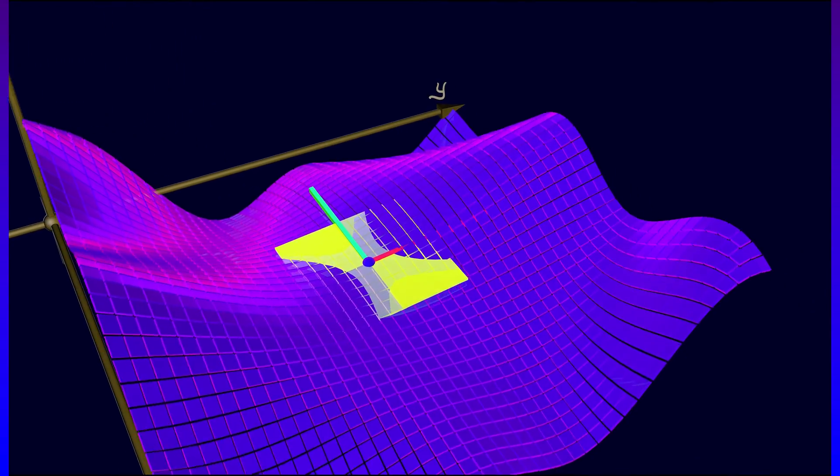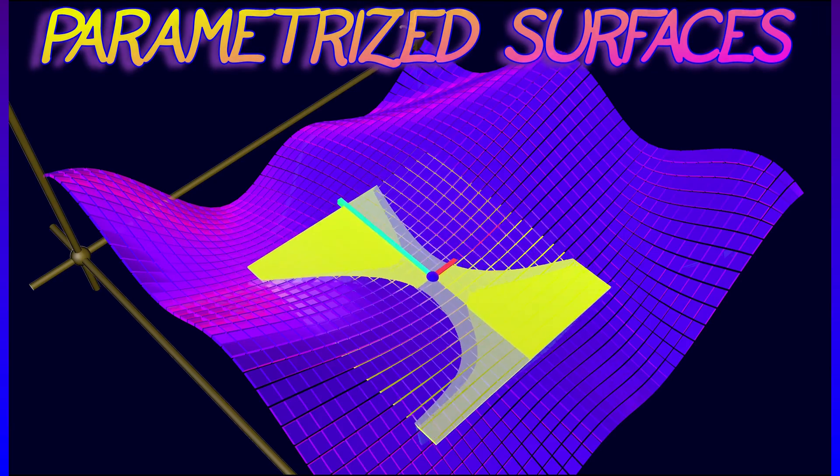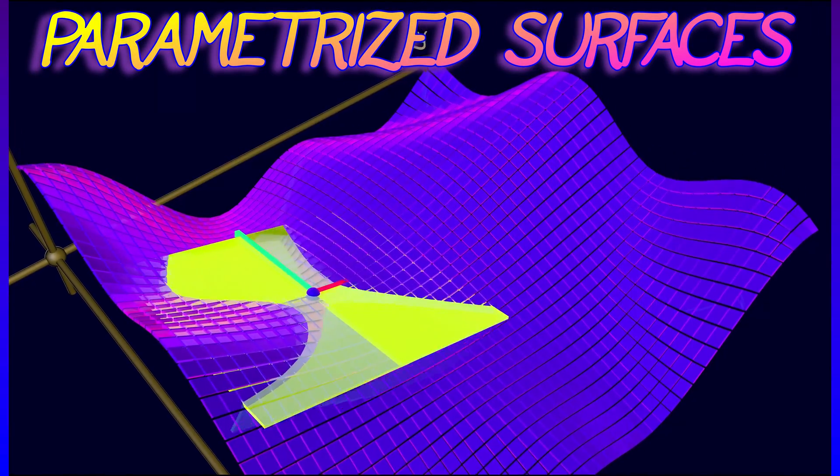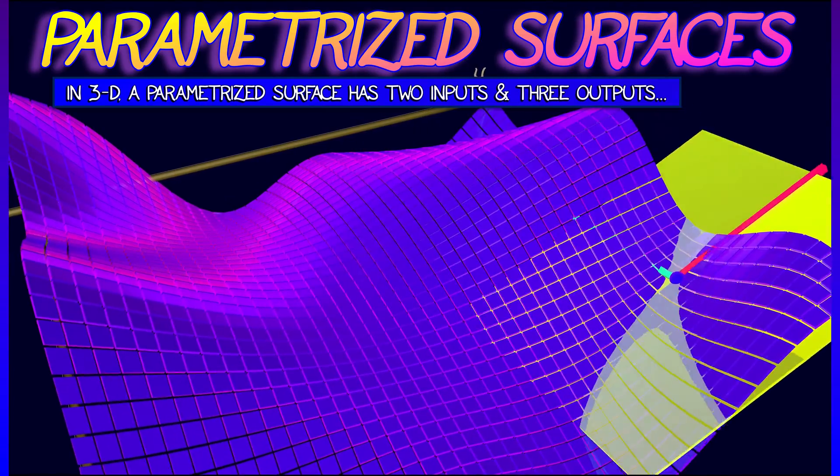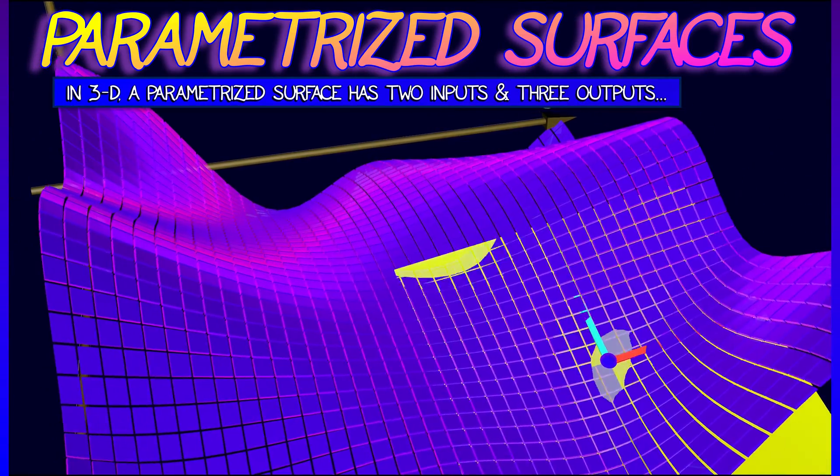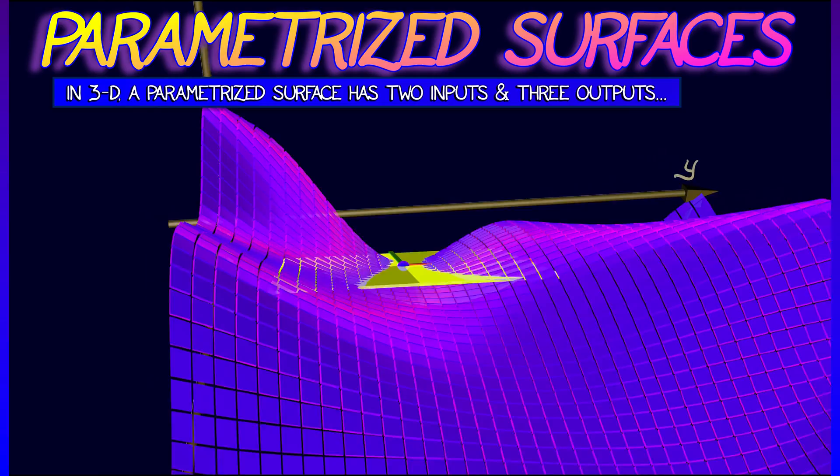Let's say that we have a parametrized surface in 3D. That means that we have a function with two inputs, two parameters, and three outputs, x, y, and z.